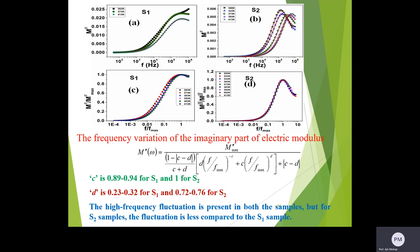The frequency variation of electric modulus has been discussed here. The value of parameters C and D in the equation indicates the deviation from Debye model at low and high frequency region. The analysis of the data suggests that the deviation from the Debye model is less for S2 sample compared to the S1 sample.